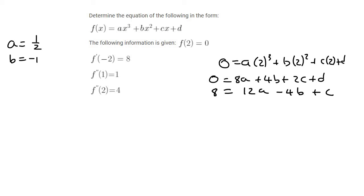Now what we do, if we have a and b, we go one step back to the first derivative equation that we had. And so we can say 8 is equal to 12 times a half minus 4 times minus 1, which is our b value, plus c. And so that's going to be 8 is equal to 6 plus 4 plus c. And so c should be negative 2.